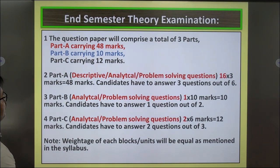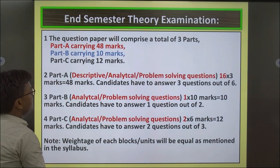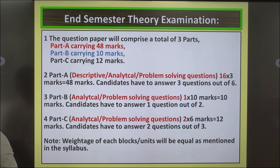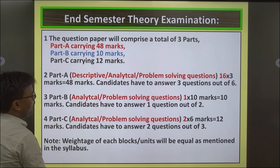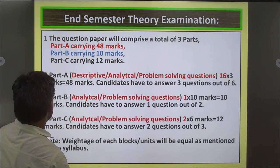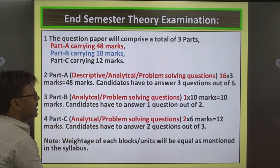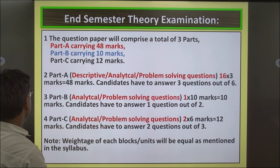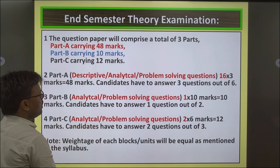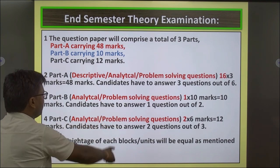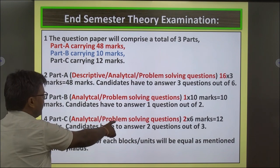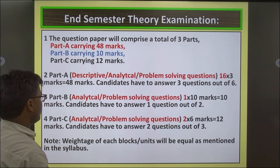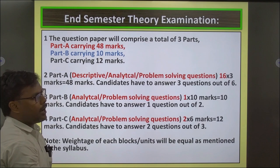End Semester Theory Examination: The question paper will comprise three parts. Part A carries 48 marks — problem solving questions, 16 questions of 3 marks each; candidates answer 3 questions out of 6. Part B carries 10 marks — analytical problem solving, 1 question of 10 marks; candidates answer 1 out of 2. Part C carries 12 marks — analytic and problem solving, 2 questions of 6 marks each; candidates answer 2 questions out of 3. Note: weightage of each block's units will be equal as mentioned in the syllabus.